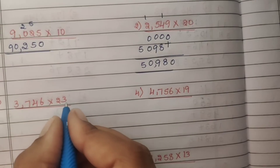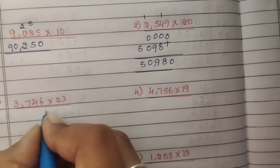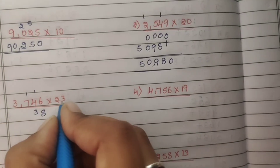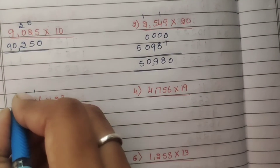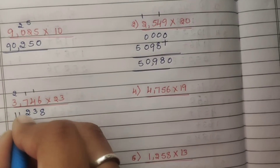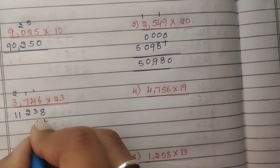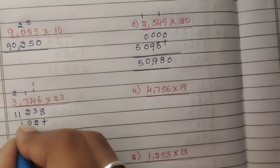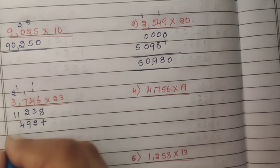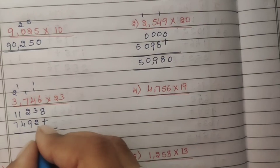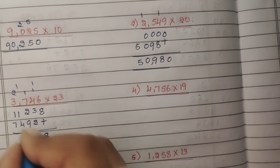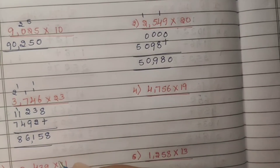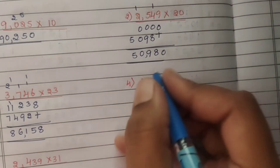Third problem: 3,746 into 23. Multiply by 3: 3 sixes are 18, carry 1. 3 fours are 12, 12 plus 1 is 13, carry 1. 3 sevens are 21, 21 plus 1 is 22, carry 2. 3 threes are 9, 9 plus 2 is 11. Then multiply by 2: 2 sixes are 12, carry 1. 2 fours are 8, 8 plus 1 is 9. 2 sevens are 14, carry 1. 2 threes are 6, 6 plus 1 is 7. Adding: 8, 3 plus 2 is 5, 2 plus 9 is 11, carry 1. 1 plus 1 is 2, 2 plus 4 is 6, 1 plus 7 is 8. Answer: 86,158.